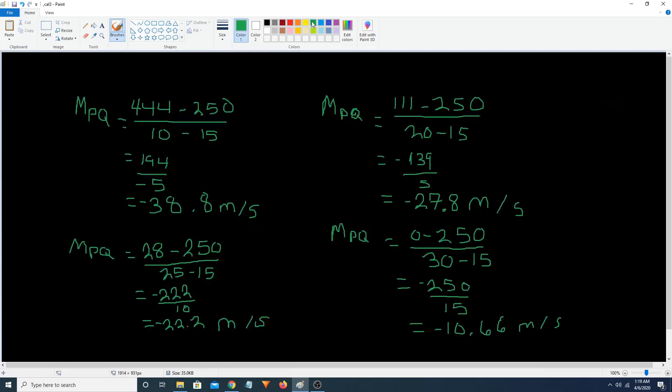Alright, so now let's take a look at our other secant lengths. So here's one of our slopes of our secant lengths. It's going to be 444 minus 250 divided by 10 minus 15. Which equals 194 divided by negative 5 equals negative 38.8 meters per second.